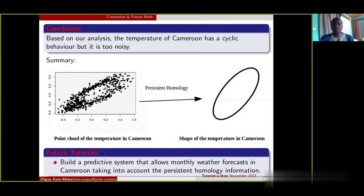So in conclusion, based on our analysis, the temperature of Cameroon has a cyclic behavior, but it is too noisy. We can see that we have used persistent homology to find the shape of our data.